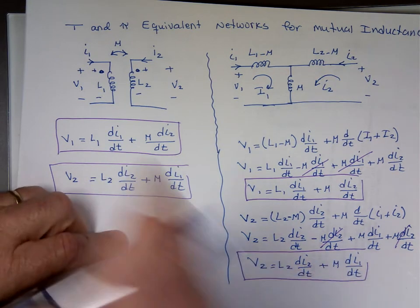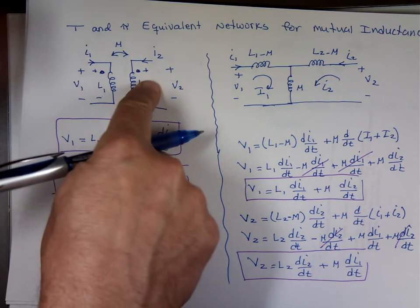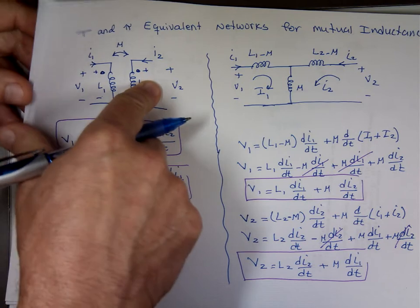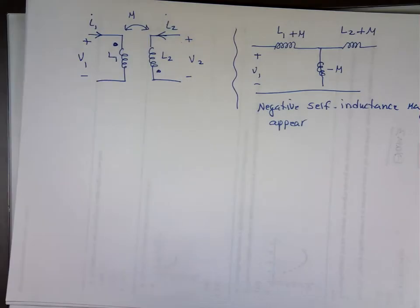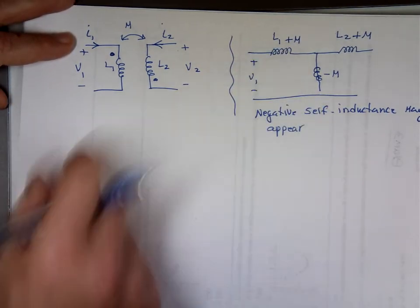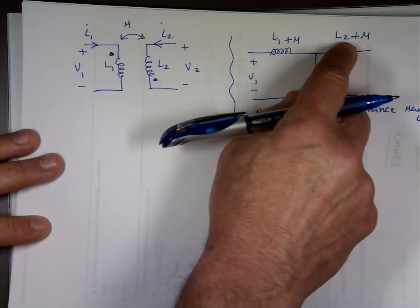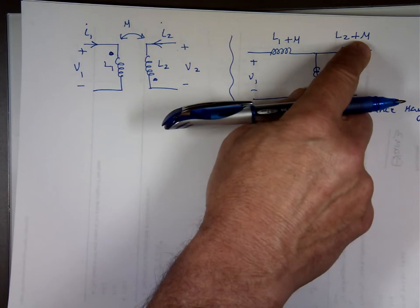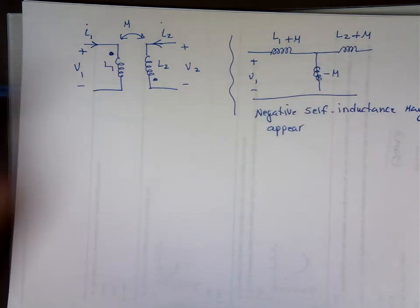Now, what happens if the polarity of the dots here are not matching? I drew that picture to save some time. And we found out that this value will be L1 plus m, this value L2 plus m, and this value will be negative m.